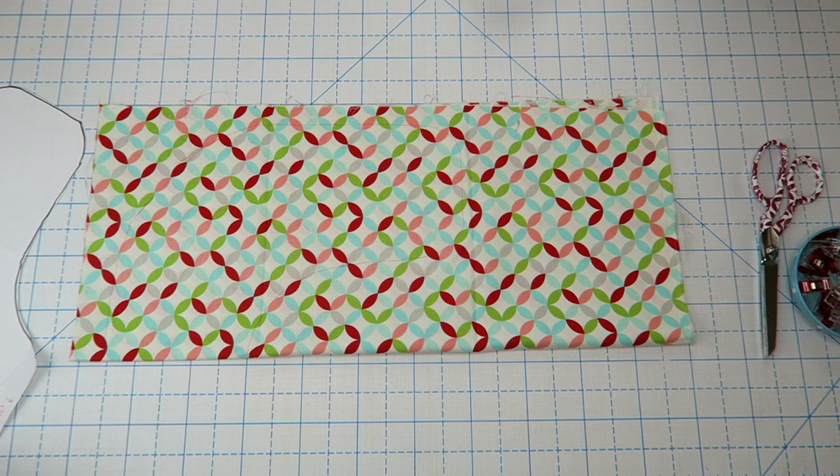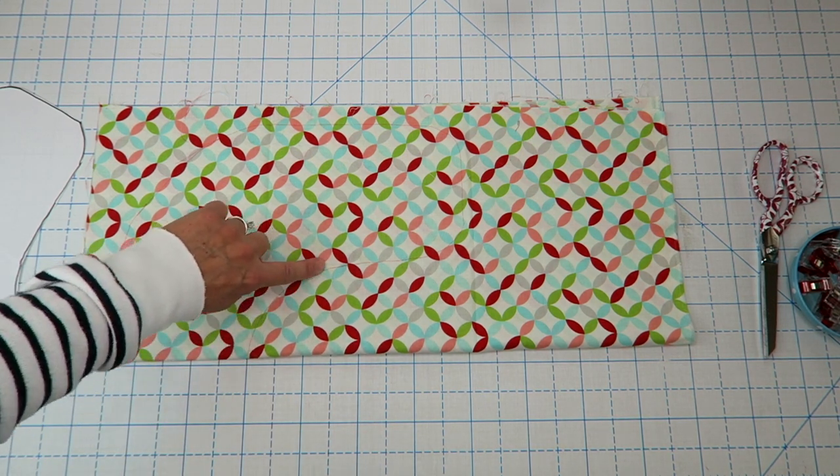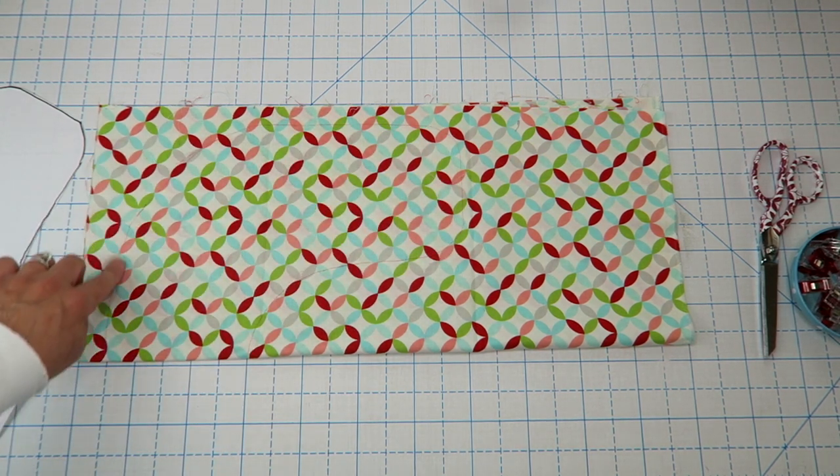Next we're going to just take our rotary cutter or regular scissors and we're going to trim out, but we're not going to trim on the line. We're going to trim about a half an inch away from the line and then we'll use our line as our actual sewing guide.